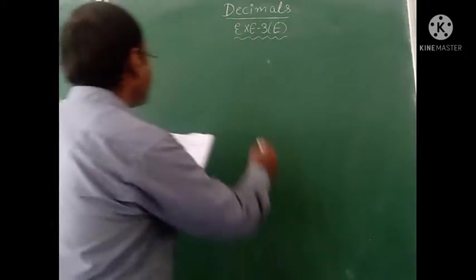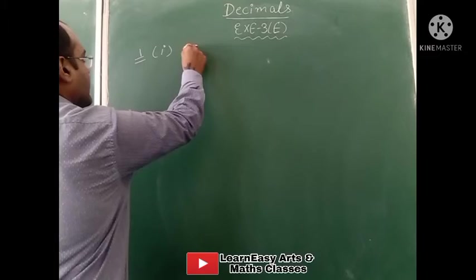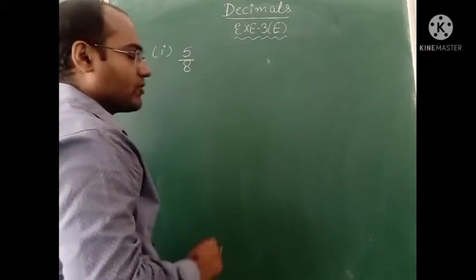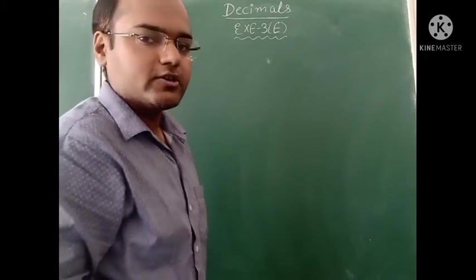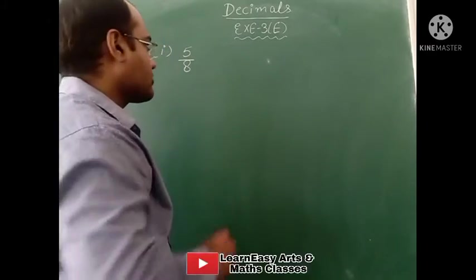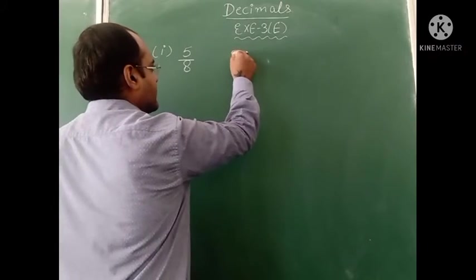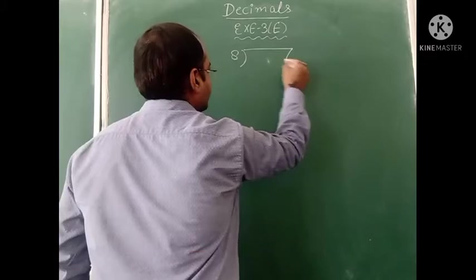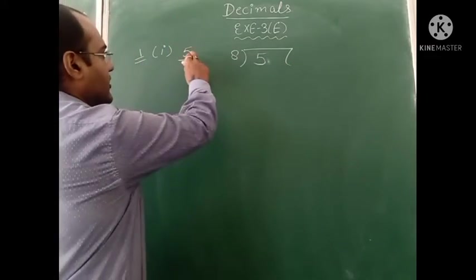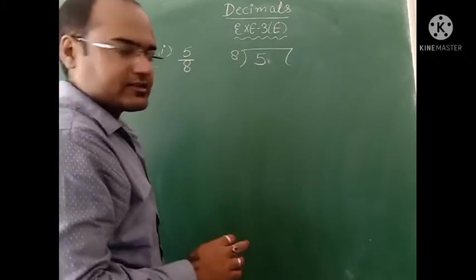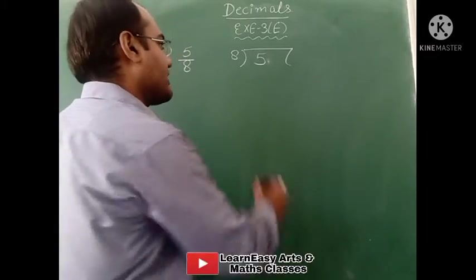First part: 5 upon 8 is given. We have to check whether this is a terminating decimal or non-terminating. For this, we will divide 5 with a table of 8. We have to show the division in the working. 8 we write outside, dividend 5 we write inside. With a table of 8, 5 is not divisible, so we have to take a decimal.